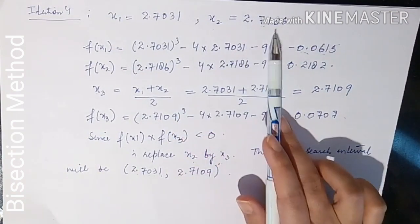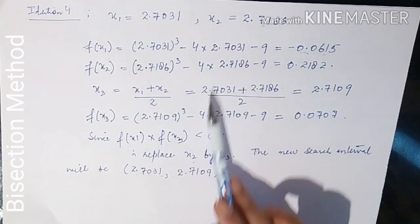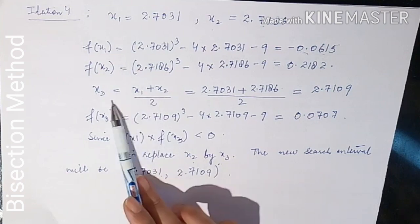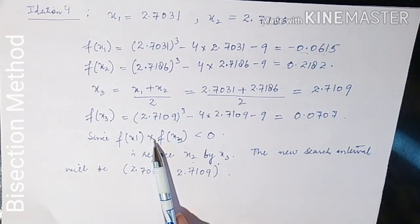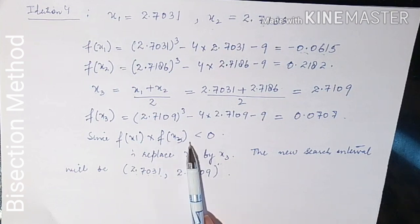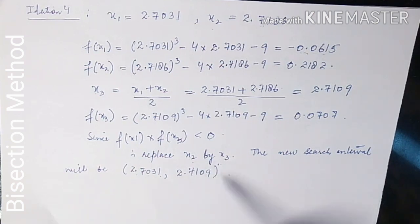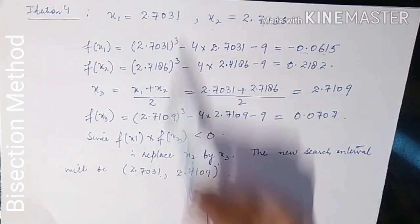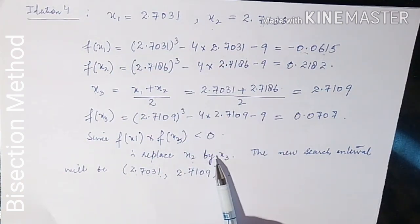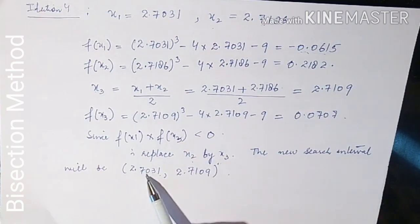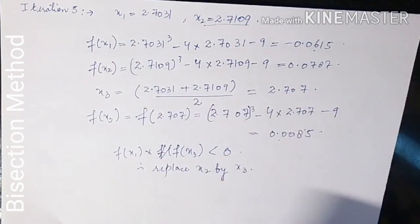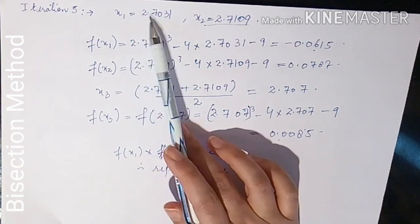In iteration 4, we calculate x3 from the interval 2.7031 and 2.7188. We check whether f(x1) × f(x3) is less than zero. If so, we replace x2 by x3. The new search interval becomes x1 = 2.7031 and x2 = 2.7109.